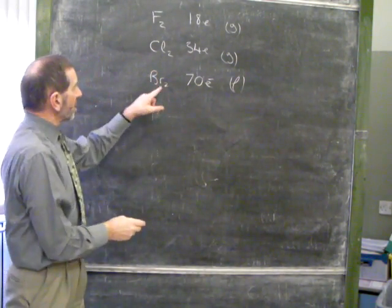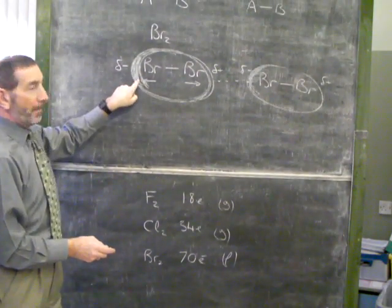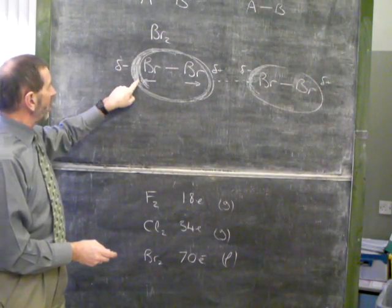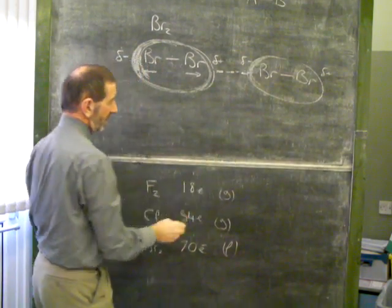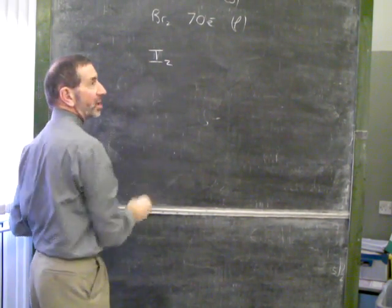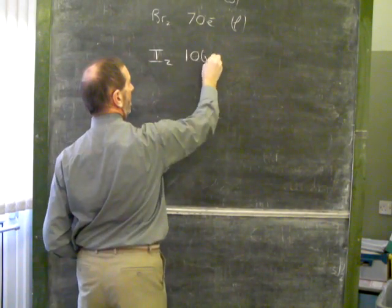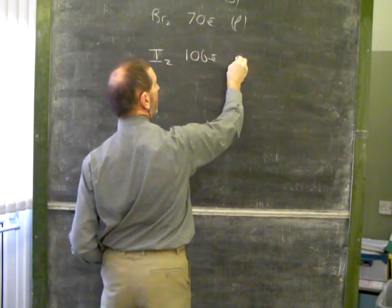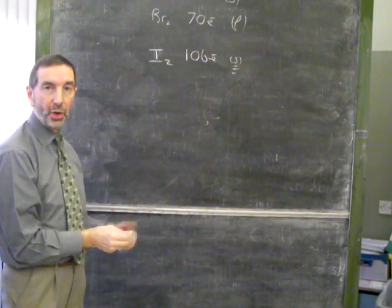Why is bromine a liquid? Because with more electrons, there's more bunching going on, there are larger charges, and stronger Van der Waals forces. And if we take this to a logical conclusion, iodine, which has the most electrons of all, with 106 electrons per molecule, is a solid. Why is iodine a solid? Because it has the strongest Van der Waals forces.